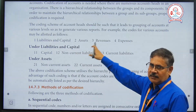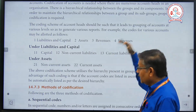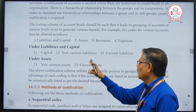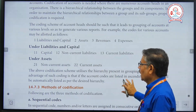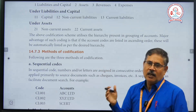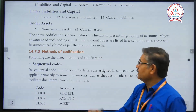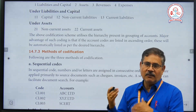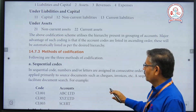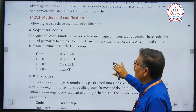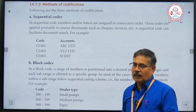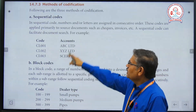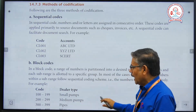Under liabilities we have capital, non-current liabilities, and current liabilities. Under assets we have non-current assets and current assets. There are three types of codes: sequential code, block code, and mnemonic code.